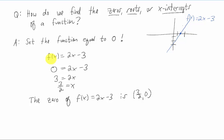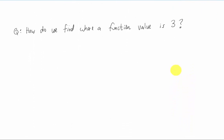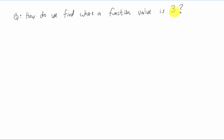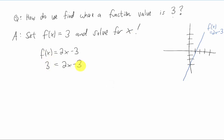And as it turns out, we might want to know where this function value is something other than 0 as well. Say, where does the function value become 3? Well, let's ask that question specifically. How do we find where a function value is 3? Well, in this case, we set the function equal to 3, and we solve for x. So I replace the function with 3, and I solve for x by adding 3 to both sides and dividing by 2. And when we solve for x, we get x is 3 as well.